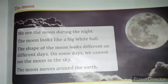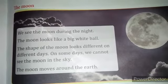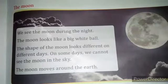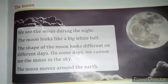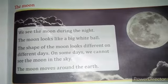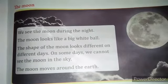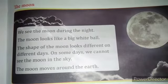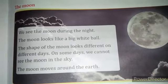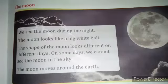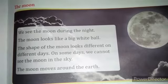Now the moon looks like a big white ball. From a far distance, as we see it, it looks like a white ball. Because it does not burn like the sun, it is called by the name white ball. It shines very brightly with the help of the light of the sun. That's why we also call it white ball.